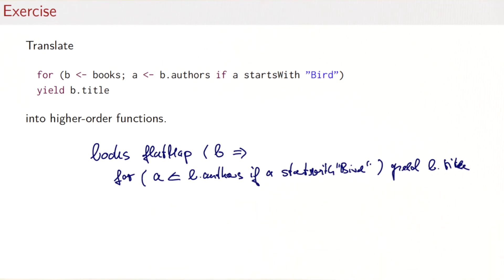So now we have to take this second for expression here and translate it in terms. I will for the moment just write the result underneath. So what we see is it's a generator followed by a filter. So that means we pull the filter into the generator. So that would be for a taken from b.authors withFilter and then we take the a again a.startsWith Bird.